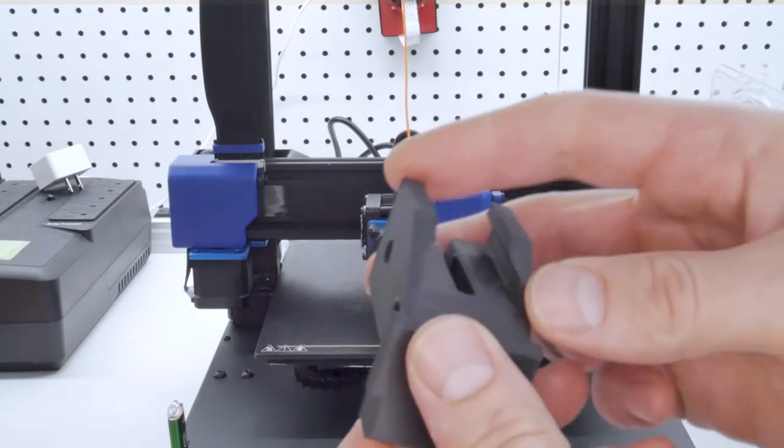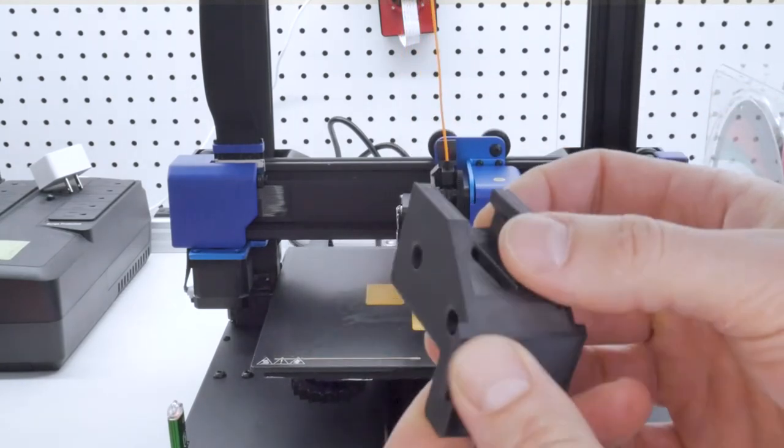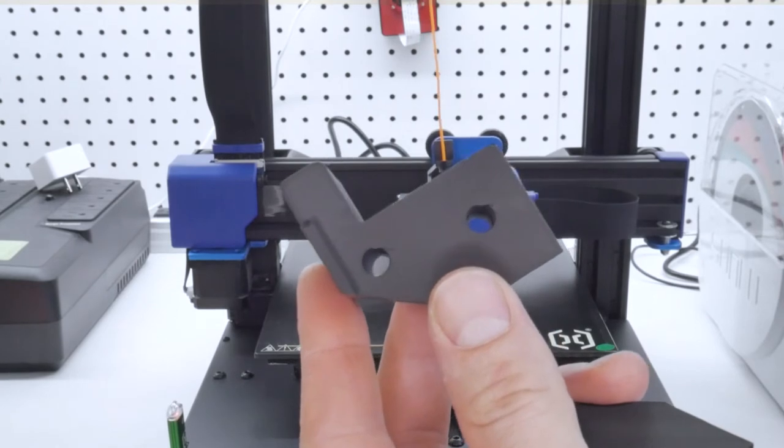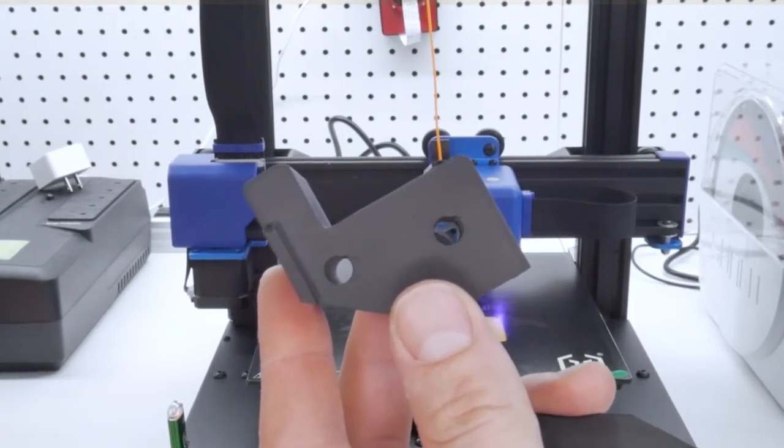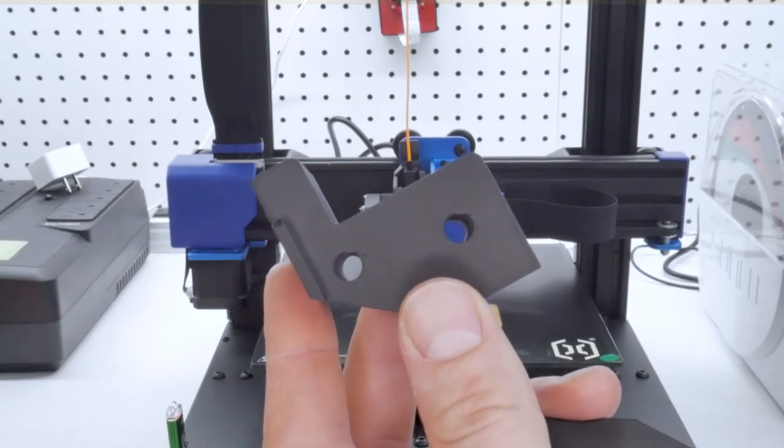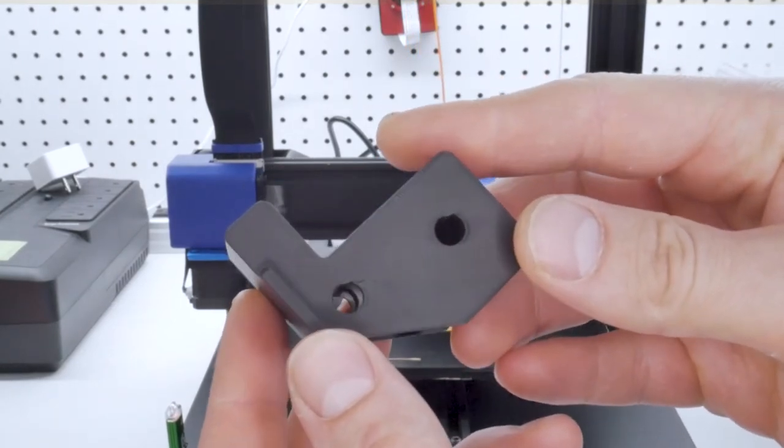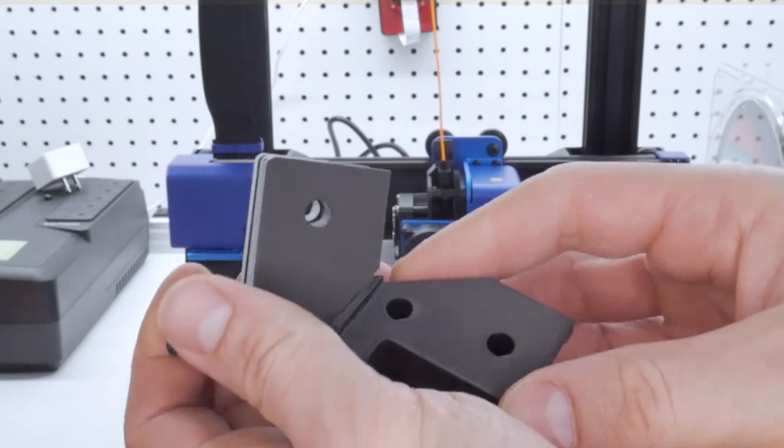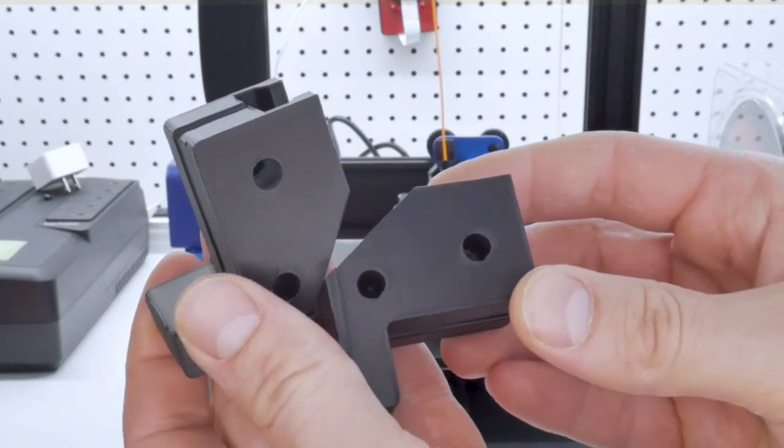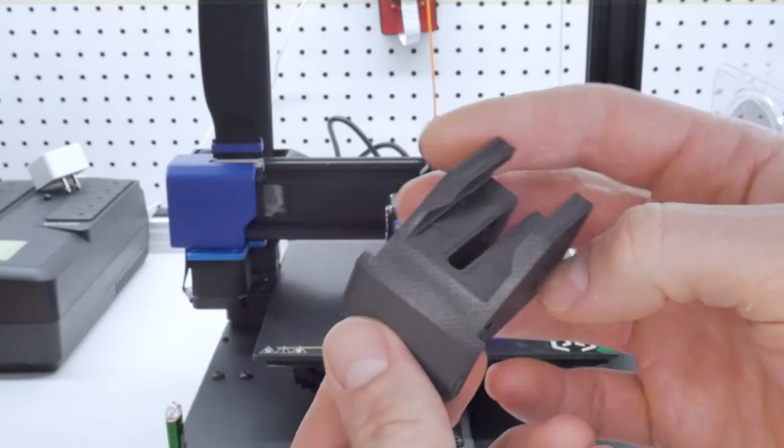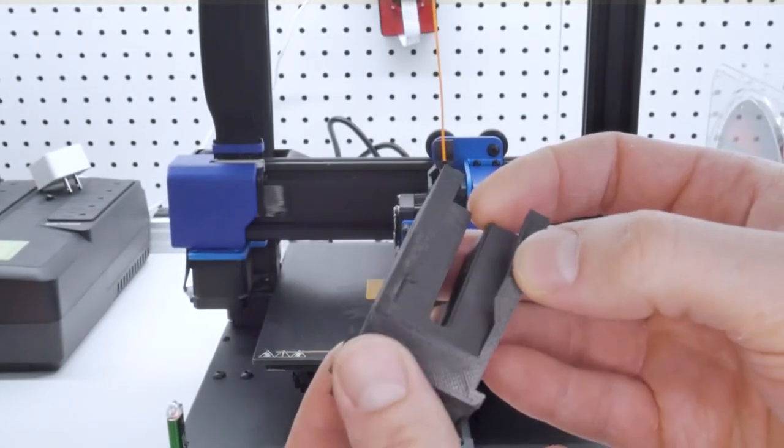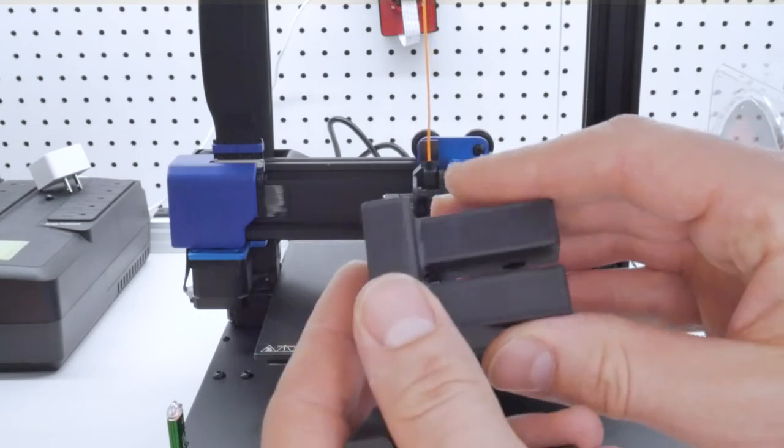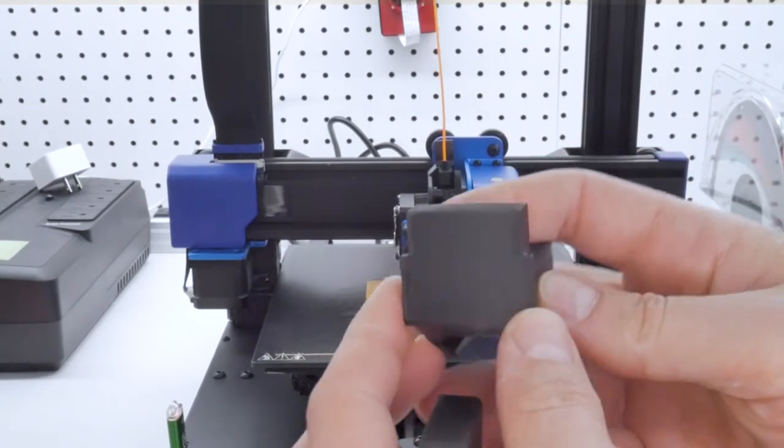For example PETG typically requires different retraction settings because it's more susceptible to oozing and it is more picky when it comes to first layer adhesion, and so the nozzle has to be a very specific distance away from the print bed as it's much less forgiving. With the Artillery Genius Pro I'm happy to report that printing in PETG was very straightforward. Again here I used a lot of the standard profiles right out of Prusa Slicer and the parts came out looking great. Oddly I did not have to play with any of the retraction settings and perhaps that's due to the direct drive extruder. Direct drive extruders inherently use smaller retraction distances and therefore you could say that they are less sensitive to retraction issues. Perhaps this is why printing in PETG was very straightforward.